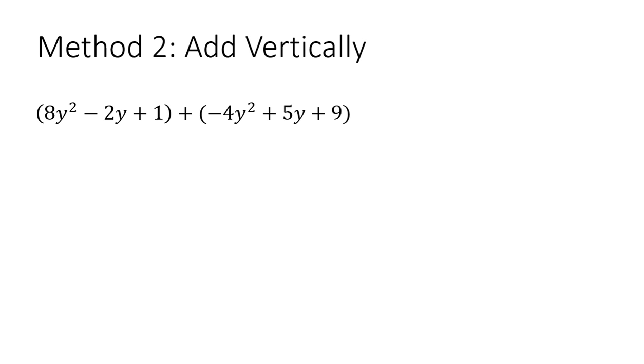We're going to use the same example, only this time we're going to use method 2. We're going to add vertically. So you decide which method is easiest for you. Right now it's horizontal, so we want to make it vertical. The first thing we want to do is line up the like terms.